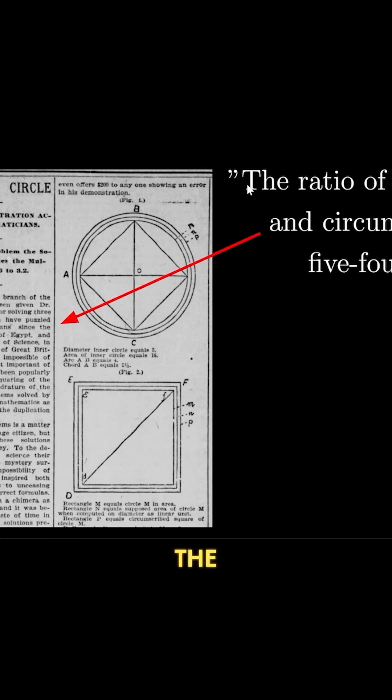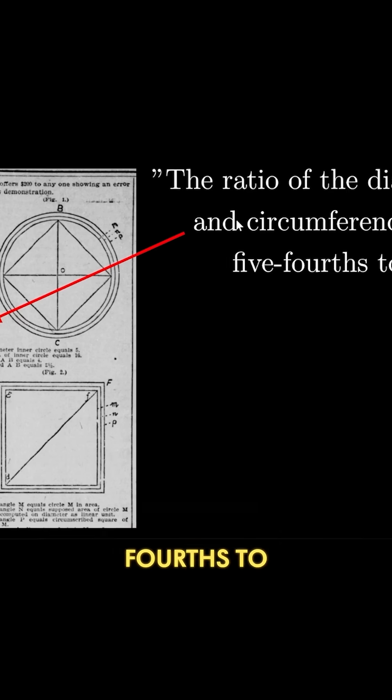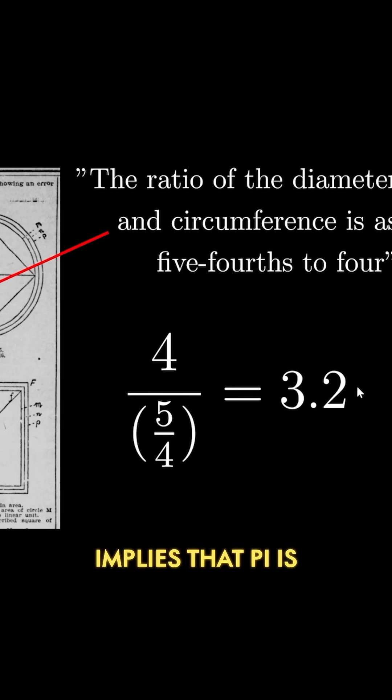The ratio of the diameter and the circumference is as 5 fourths to 4, which implies that pi is 3.2.